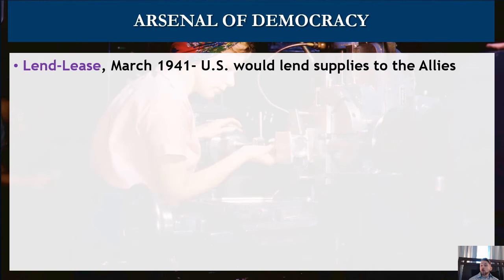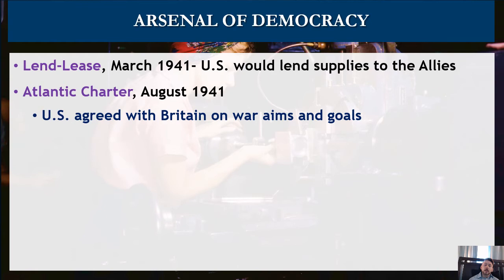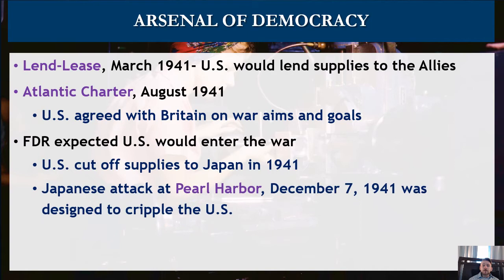In August of 1941, the United States met with Britain to agree on potential war aims and goals should the U.S. be brought into the war. This was the Atlantic Charter, which is pretty much plagiarized from Woodrow Wilson's 14 points — if you ran this through Turnitin, it would definitely get a high score. Franklin D. Roosevelt fully expected the U.S. would enter the war; we know he was waiting for the moment, waiting for something the U.S. could use as a pretext for war.